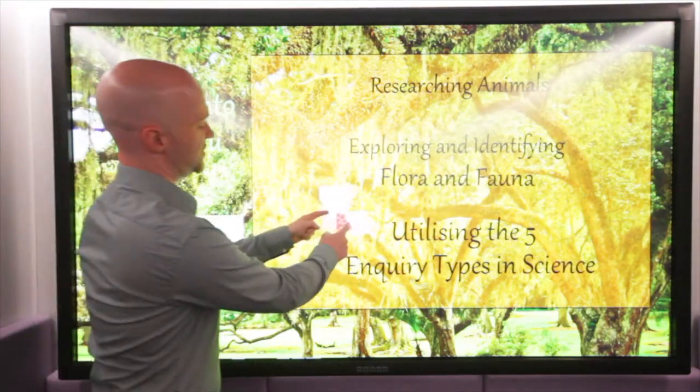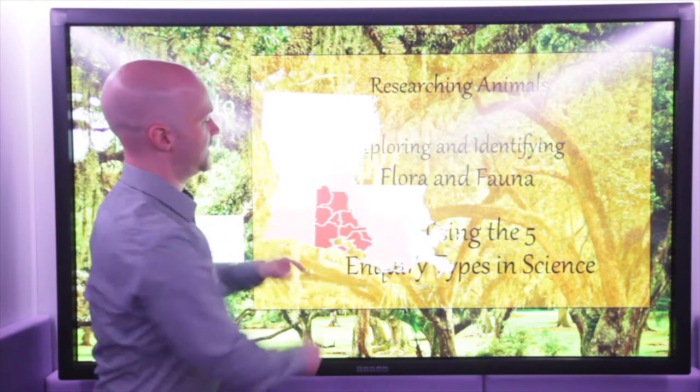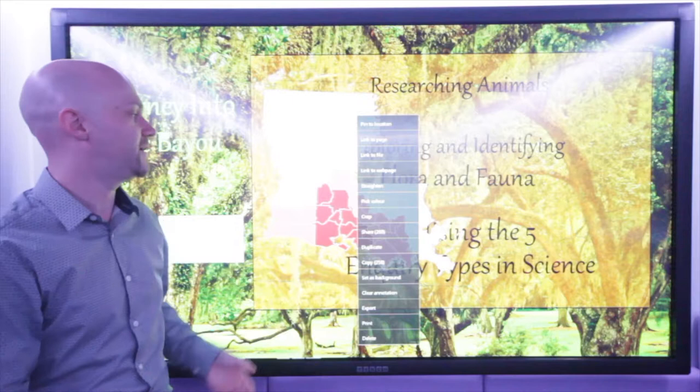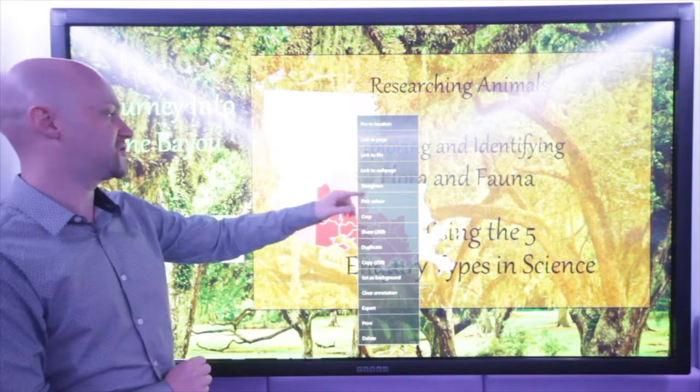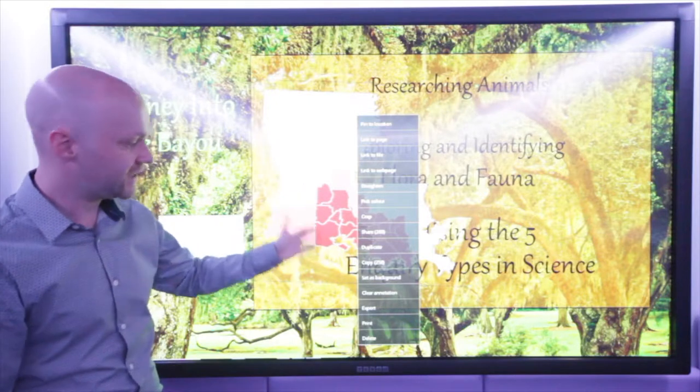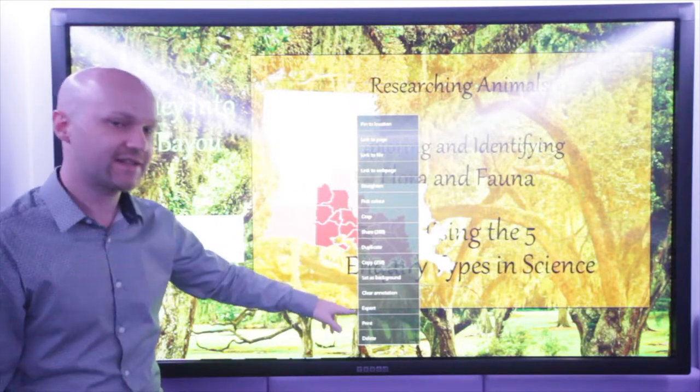Images work a bit differently. So this PNG image of Louisiana, if I press and hold on that I'm going to have a load more different opportunities to play with it. Such as the same as before, the straighten, the linked page and so on. But now I have things like share, duplicate, copy, set as background and something that says clear annotation.